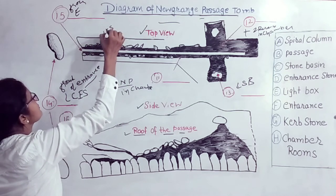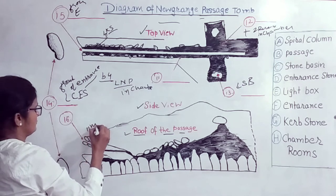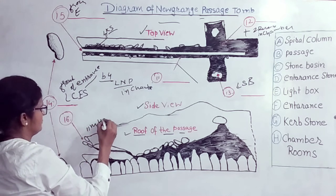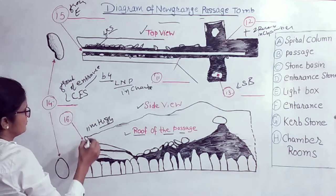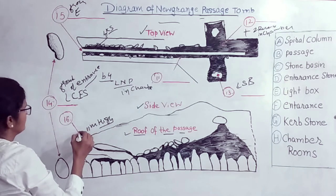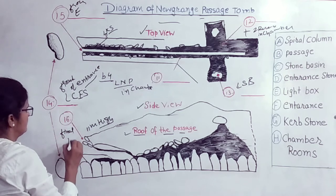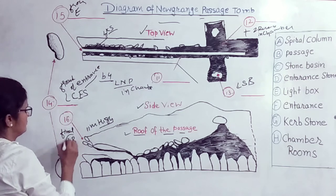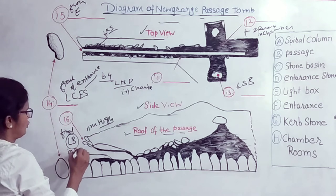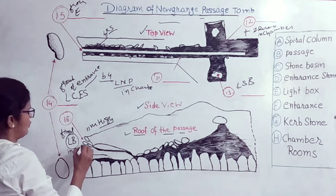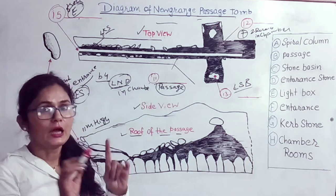An 11-metre high circular mound made of stone covers the tomb, making it appear even larger and more imposing than it is, especially from a distance. The final thing I want to mention before we set off is the light box — an opening in the roof of the passage above the entrance, which allows the light of the sun to enter and illuminate the tomb at sunrise on the day of the winter solstice.